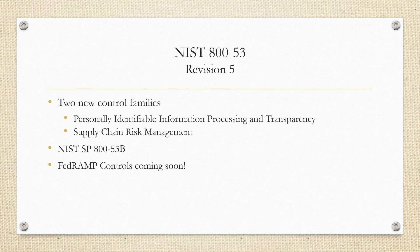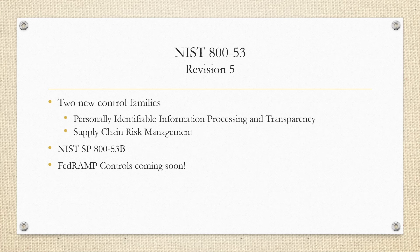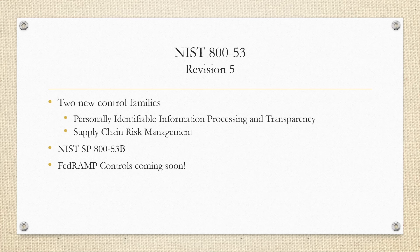Now that SP 853B is a separate document, there is room for interpretation — these guidelines and control baselines may continue to evolve over time, and changes could be communicated through this separate document. That's one of the speculations from webinars and other sources. Also worth noting: FedRAMP controls for cloud environments are not yet updated to Revision 5, but they have posted forums on their website indicating it's coming soon. For now, you'd still work off the old Revision 4 baselines for moderate, low, and high impact levels.